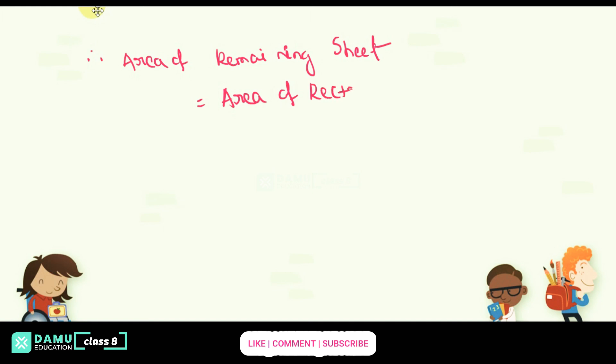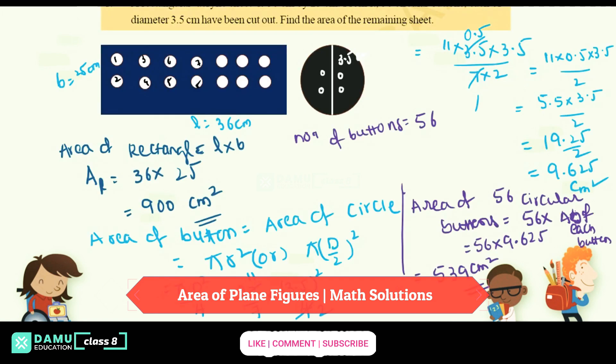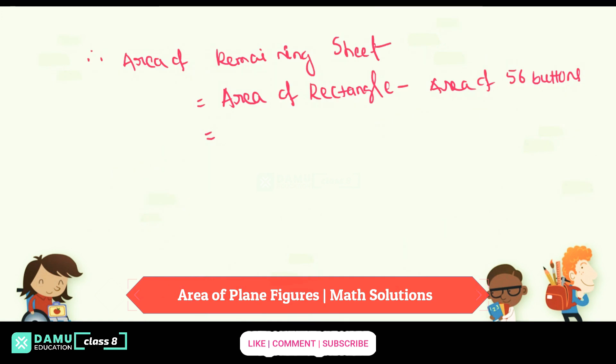Area of rectangle minus area of 56 buttons. Area of 56 buttons. So area of rectangle we got it as 900 centimeter square, that is 900 minus area of 539.